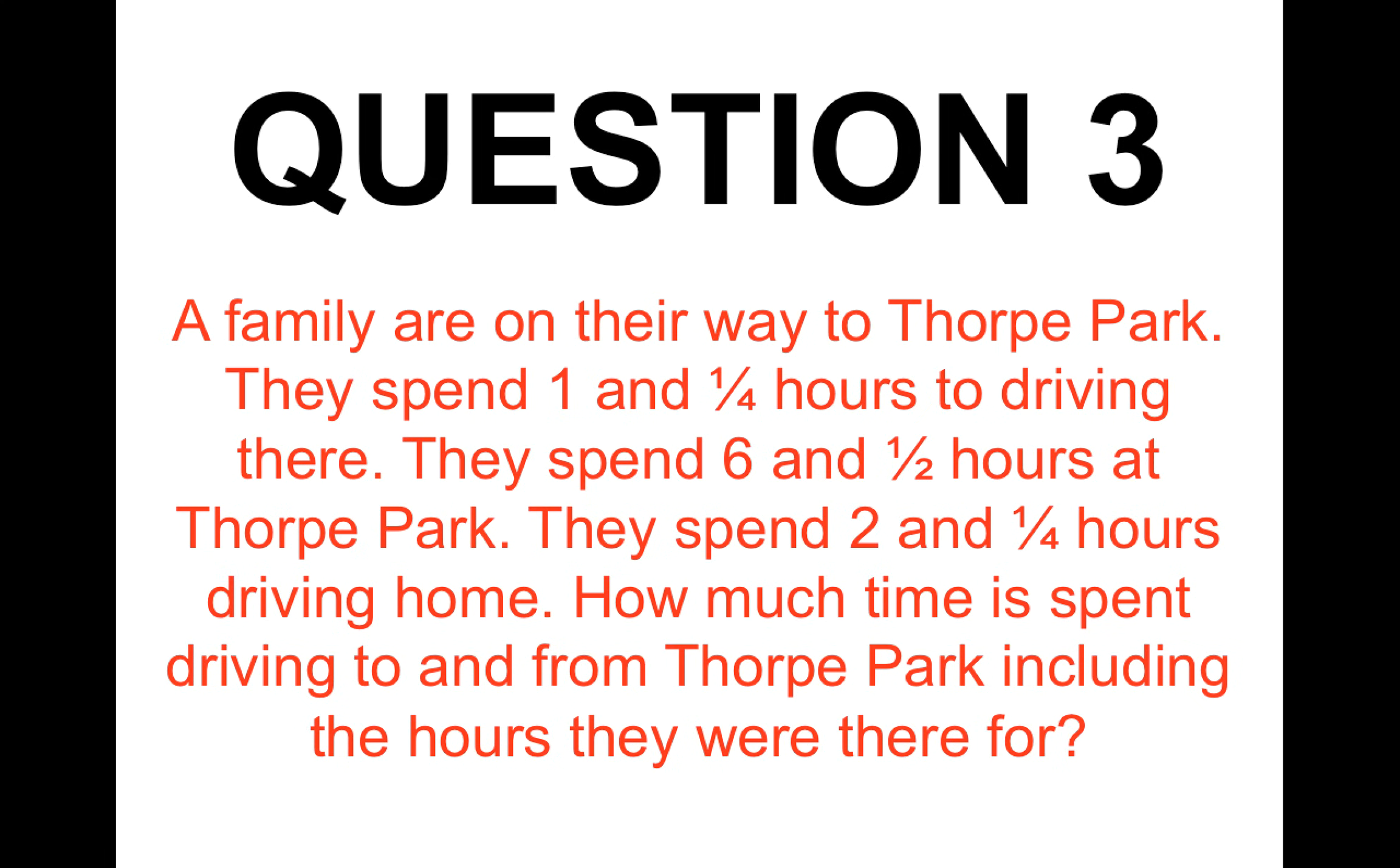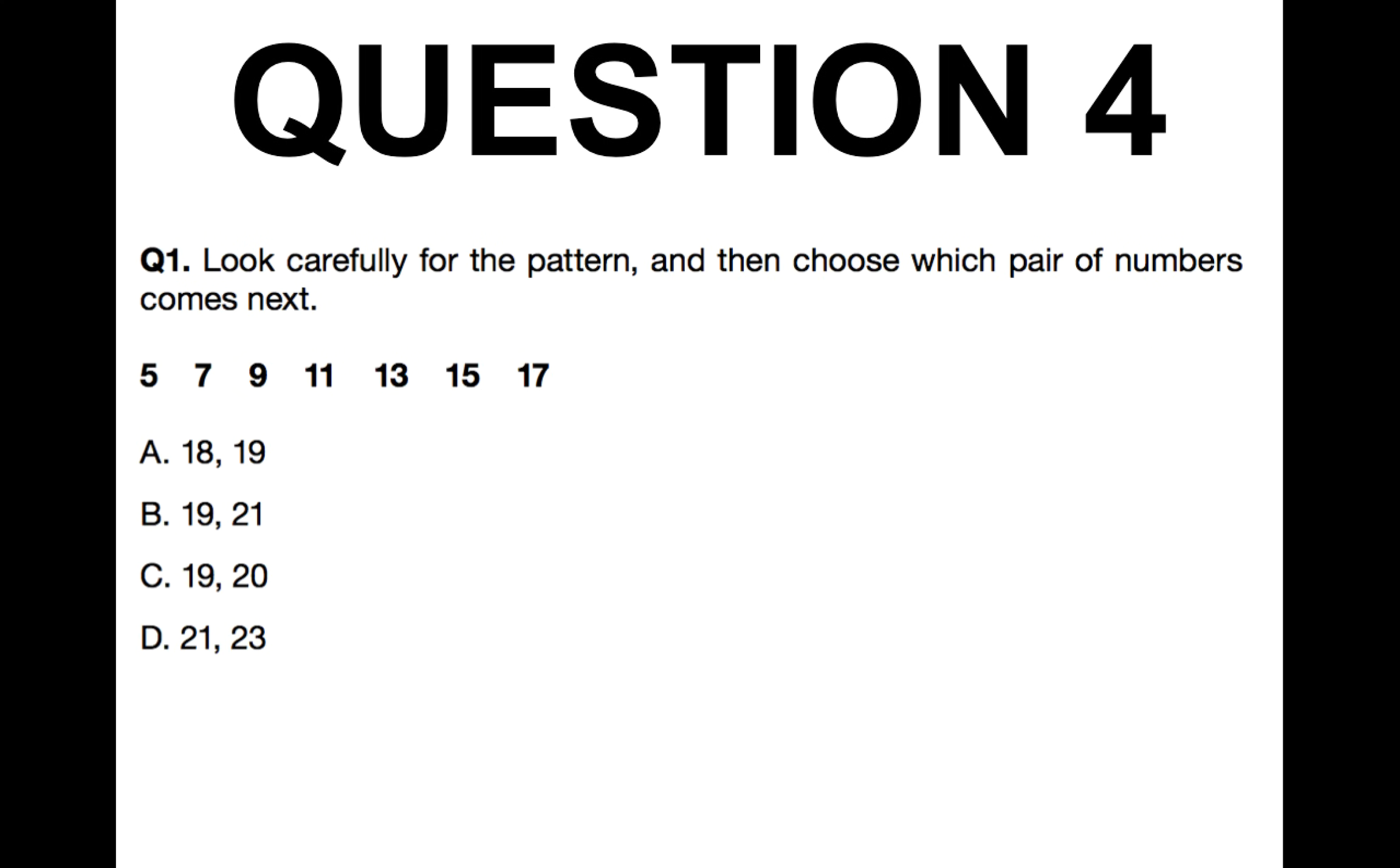Okay so moving on to the next question. Question number four. Now look carefully for the pattern in the numbers and then choose which pair of numbers from A to D comes next. So the pattern is 5, 7, 9, 11, 13, 15, 17. And then we're looking for the next two numbers in the sequence. You've got 20 seconds.